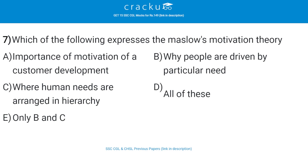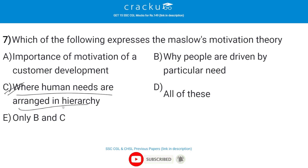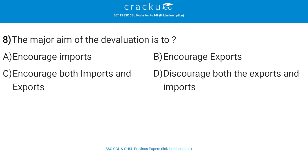Which of the following expresses Maslow's motivation theory? The correct answer is C, that is where human needs are arranged in a hierarchy. Maslow's theory states that our actions are motivated by certain psychological needs. It is often represented by a pyramid of needs, with the most basic needs at the bottom and more complex needs at the top.